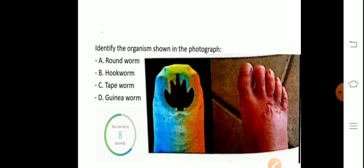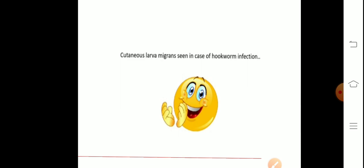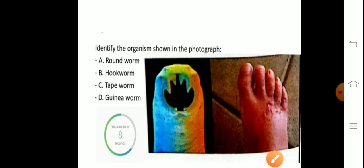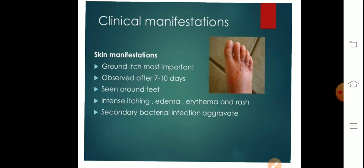Next — identify the organism responsible for the clinical feature shown in the photograph. The answer is hookworm. The clinical feature shown is cutaneous larva migrans, seen in case of hookworm infection. The clinical manifestation includes ground itch — intense itching is present over the skin, observed after 7 to 10 days of infection. The patient also has erythema and rashes.